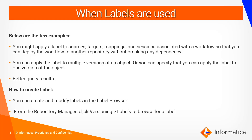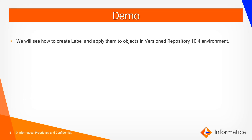We can also use a label to either select multiple versions or a single version of an object, and it can also be used for getting better query results. To create a label, we just have to go to the label browser, which is present in the repository manager, and click on Versioning and then go to Labels. Let's go ahead and see the demo to understand it better.